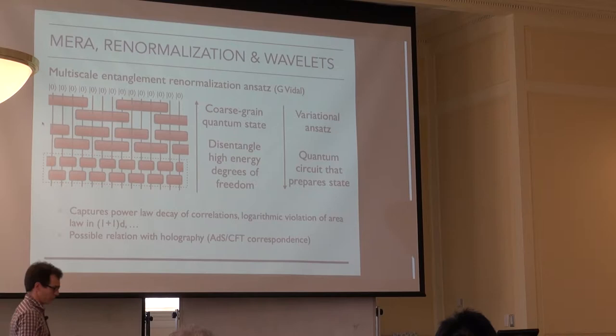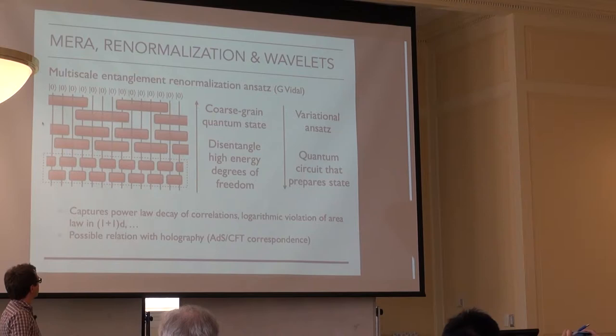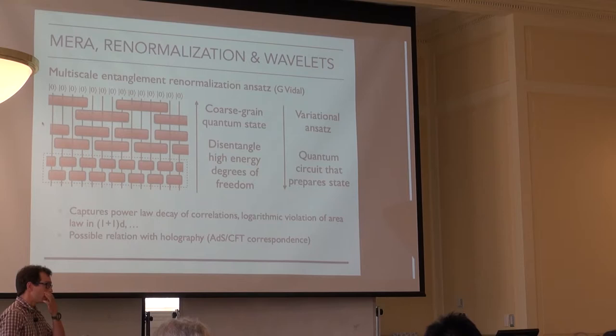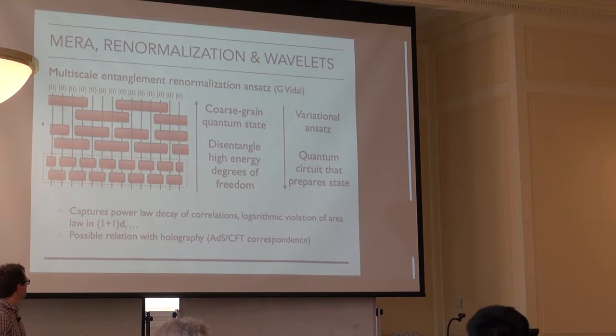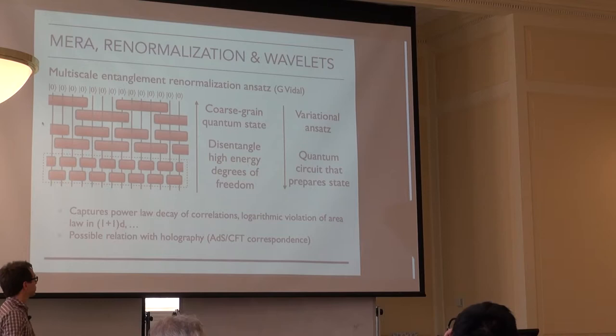Now let me come to the main topic of my talk, beginning with an introduction to MERA renormalization and its relation to wavelets. The multiscale entanglement renormalization ansatz of Guifré Vidal is a tensor network aimed at targeting systems for which MPS are less suited — namely those without a mass gap, which have diverging correlation length and power-law decay of correlations.